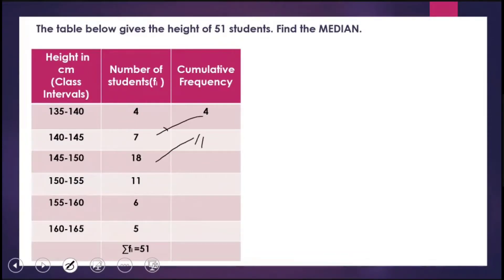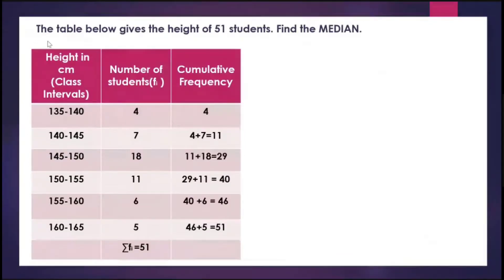Then 11 plus 18 equals 29. Then 29 plus 11 equals 40. 40 plus 6 equals 46. 46 plus 5 equals 51. So the total is 51. This is the cumulative frequency table formed by consecutive addition.